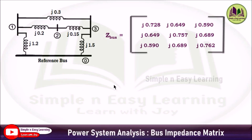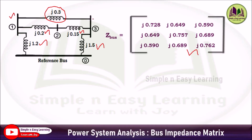Substituting into matrix format, the intermediate Z-bus after step 4 node elimination is the 3×3 matrix with these values. Now considering the diagram, one more reactance remains — j0.3 connected between bus 1 and bus 3. Since bus 1 is already considered, it is an existing bus, and bus 3 is also an existing bus, so we cannot apply the previous procedure in this step.